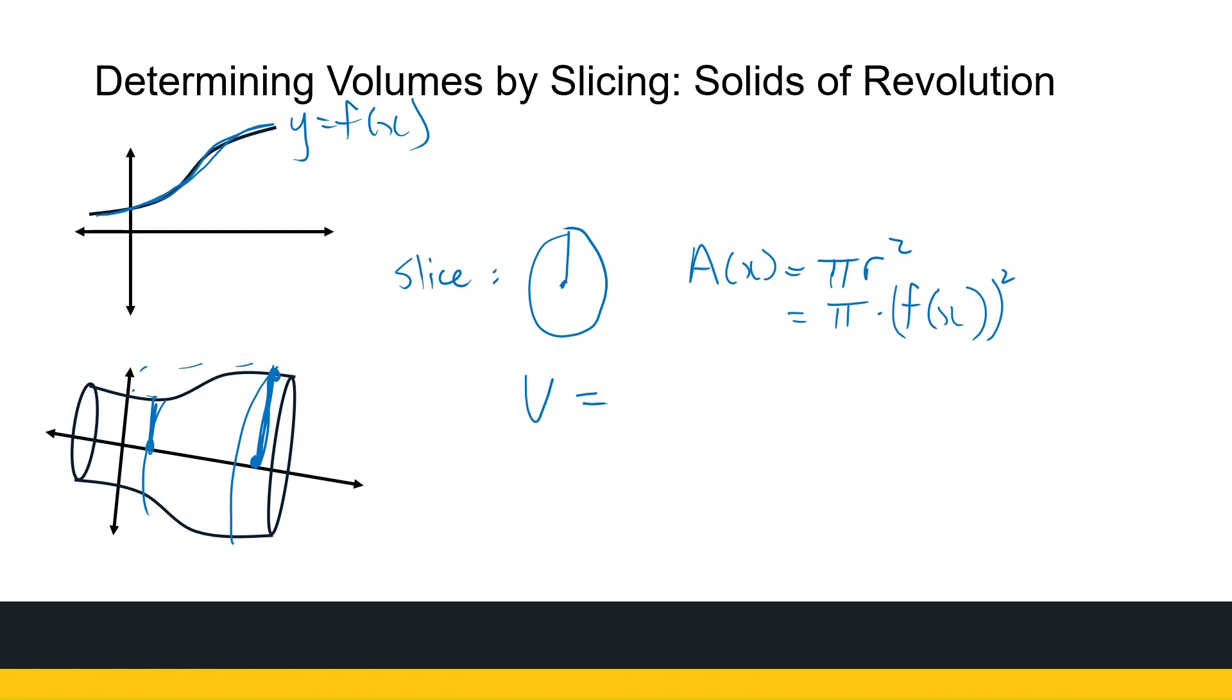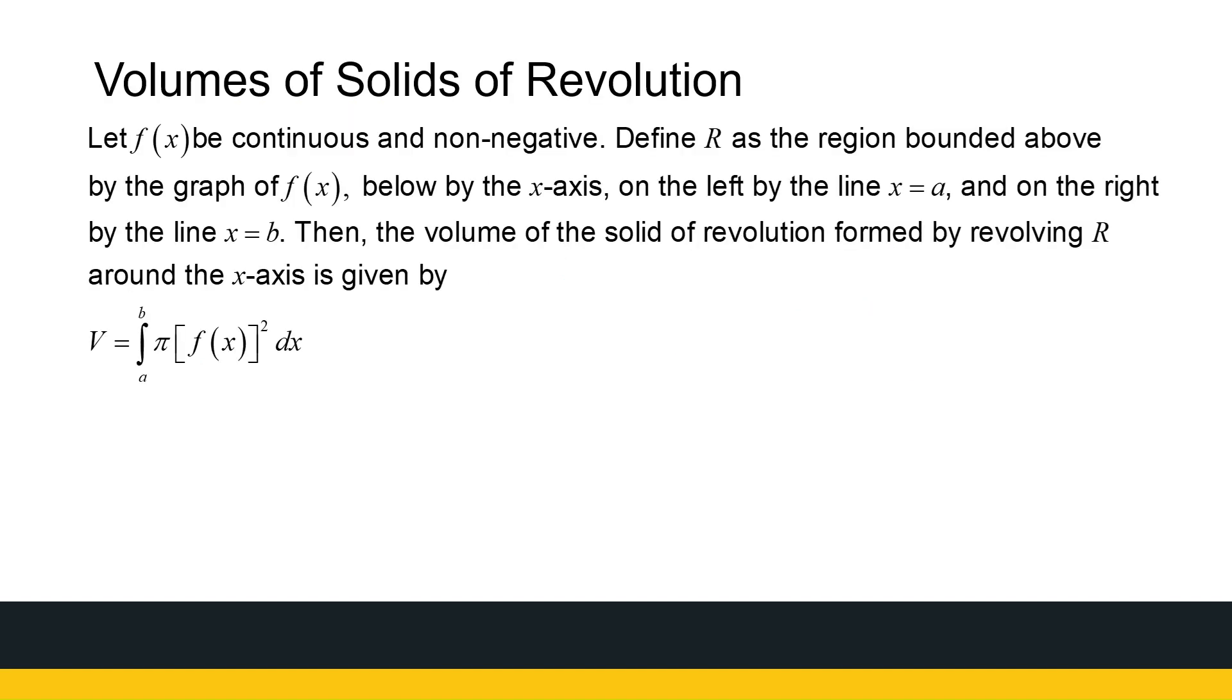So my volume for a solid of revolution is going to be the integral from A to B, wherever I start to where I end, the X values, of pi times my function squared dx. So you can see where the formula for the volume of a solid of revolution comes from. We're looking at the area of the slice, and that's where we get it from. To formalize it, f has to be a continuous and non-negative function. There's some other information, but that's what the formula looks like.